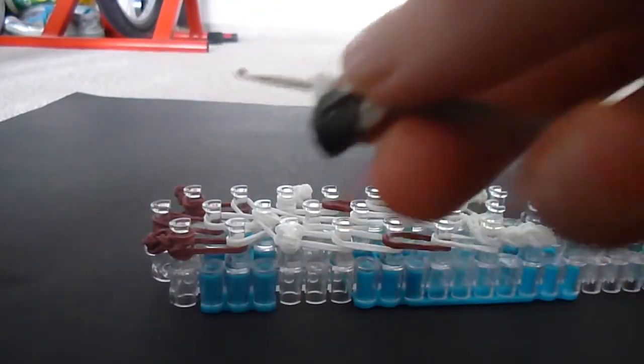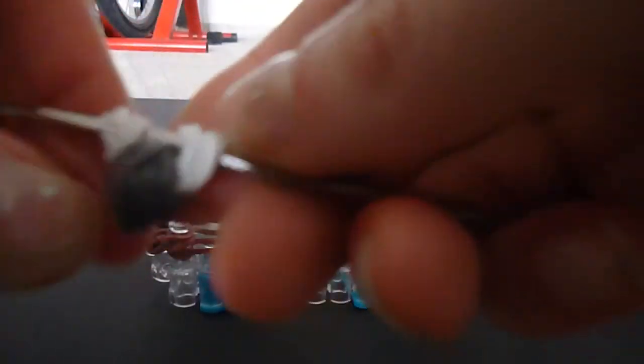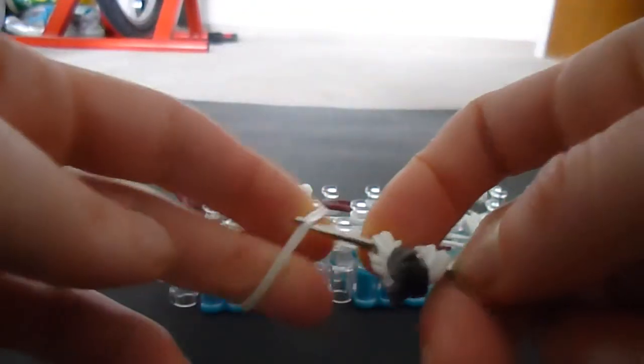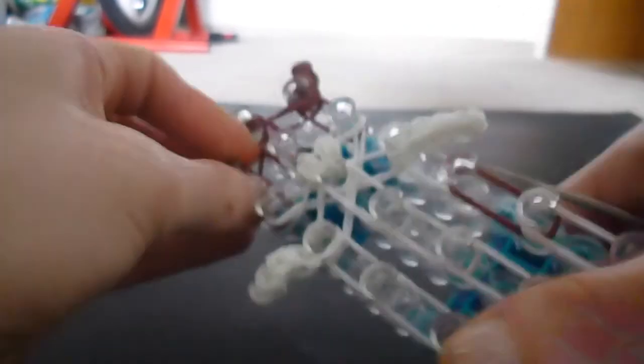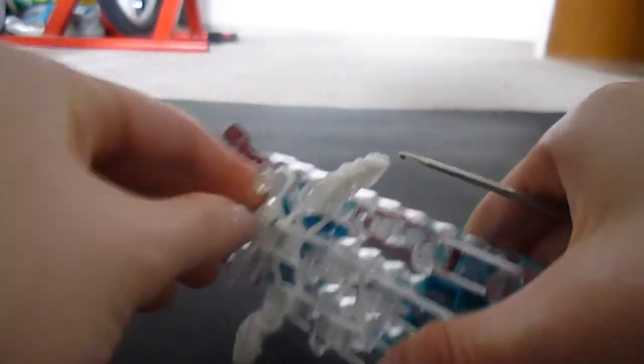And then this goes onto two more white bands and we'll be ready to attach it. Put all of these bands onto these two, and this goes from your second peg to your second peg, and we're going to kind of pull this out a little bit.